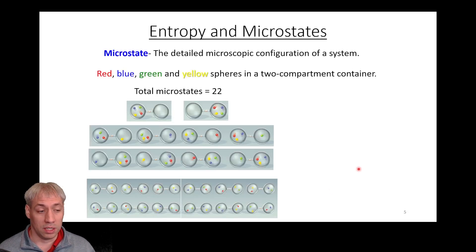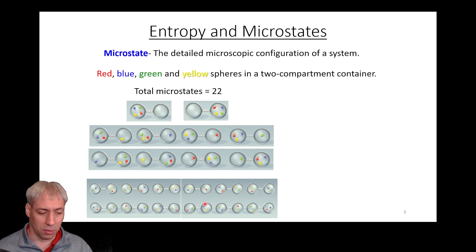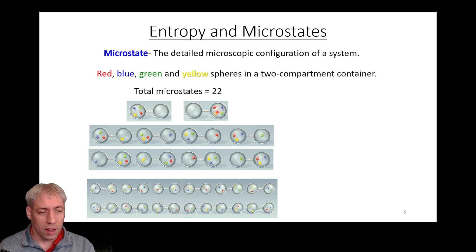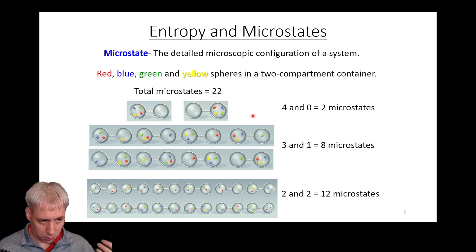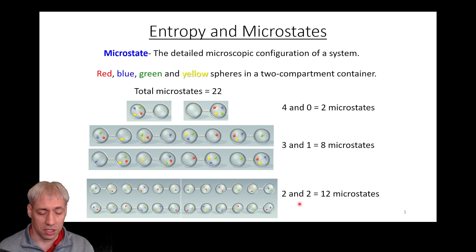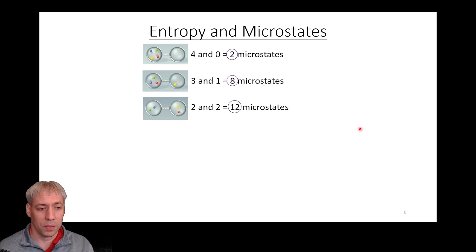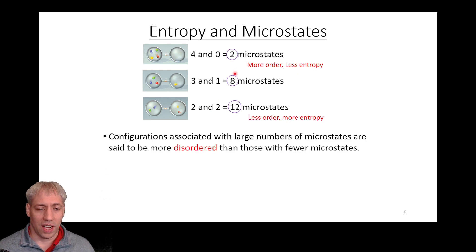You can think about all the possible ways you can draw this: four in this chamber and zero in this, zero in this and four in this, three and one in different combinations, two and two in different combinations — keeping track of which colored sphere is in which chamber. If you think about all the different ways this can exist, we have 22 possible microstates: two that are four-and-zero, eight that are three-and-one, and twelve that are two-and-two. This is based on statistics. Each one of these is a configuration of the system.